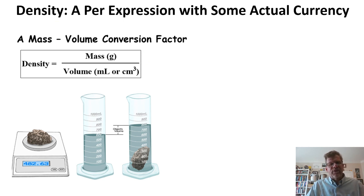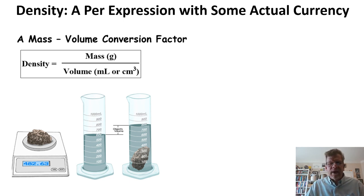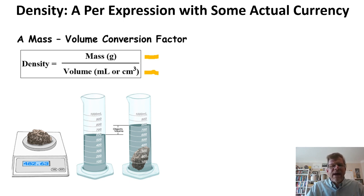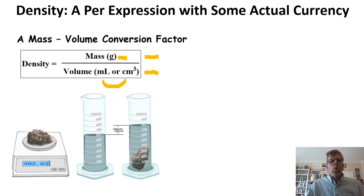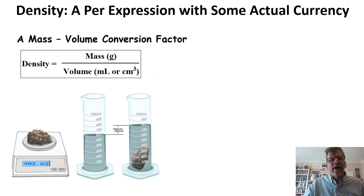Density has mass in the numerator and volume in the denominator, and that value — mass divided by volume — is the density of the substance. Almost always, mass is given in grams, not kilograms, not ounces, not pounds — but grams. Volume is almost always given in milliliters or cubic centimeters, which are interchangeable: one milliliter is exactly one cubic centimeter. So density is almost always expressed as grams per milliliter or grams per cubic centimeter.